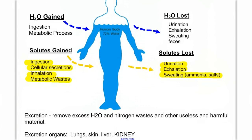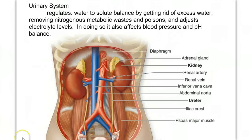Excretion is the removal of excess water and nitrogen waste, and other useless and harmful materials. The organs of excretion are the lungs, the skin, the liver, and what we're going to focus on — the kidney. The kidney is part of the urinary system, the main system that regulates this water-to-solute balance, and by doing so, also influences our blood pressure and pH balance.